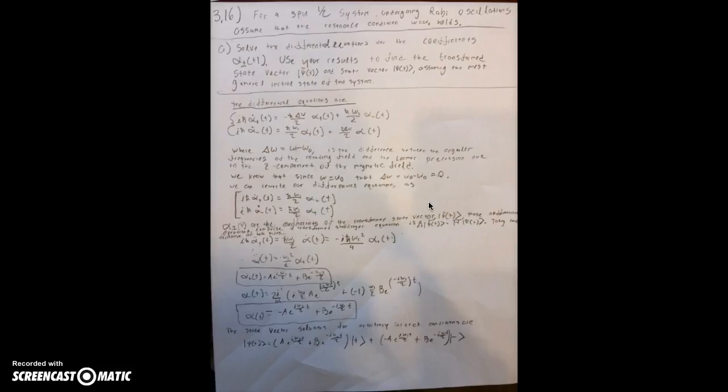Going further, we'll take the derivative of both sides of the differential equation, and we find that alpha plus of t is equal to this and alpha minus of t is equal to this.